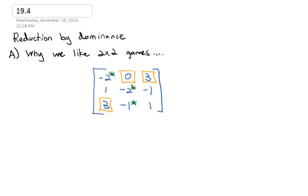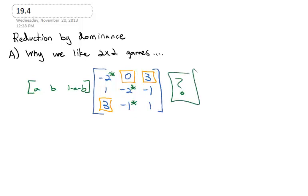What we would do for a mixed strategy is multiply to find the row player's strategy. This time we need three entries, and all three entries need to add up to one. Before, we could do r and 1 minus r because there were only two entries. But now with three entries we have a, b, and 1 minus a minus b. That's going to give us three variables, and our old process doesn't work anymore.